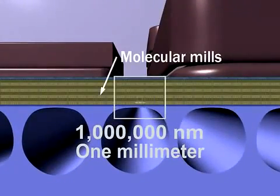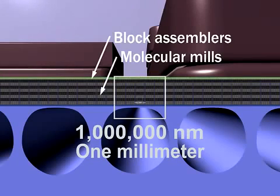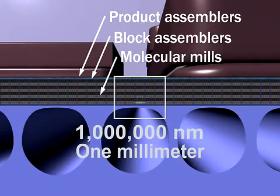Machines in the lowest layer process molecules into building blocks, passing them upward to machines that assemble them into larger components, and then to machines that add these components to the product.